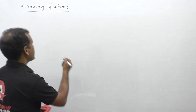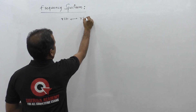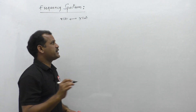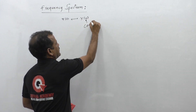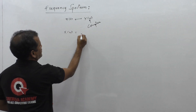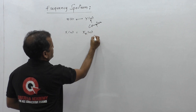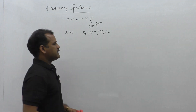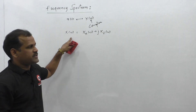I am taking a signal x of t which has Fourier transform X of omega. Let us consider that X of omega is a complex quantity. If it is a complex quantity, it should have a real part and imaginary part, and can be written as the real part of X of omega plus j into the imaginary part of X of omega. Then let us consider the magnitude and phase of this complex quantity.